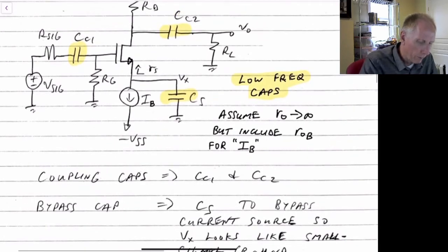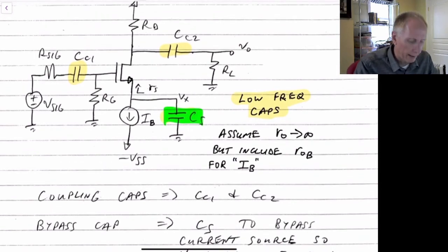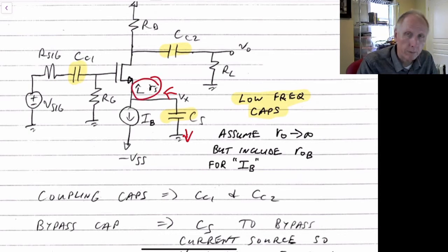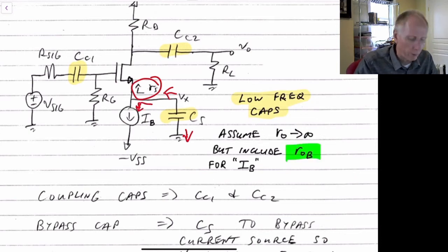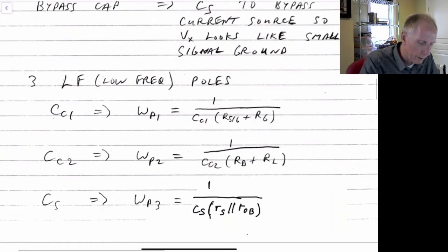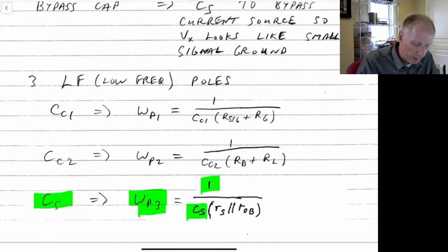Finally, for C sub S, we want to find the impedance it would see across it — looking down into ground and up into the source node. That would be R sub S looking into the source of the transistor, but also R sub B looking down, which we've defined as R sub OB. So we see R sub S in parallel with R sub OB. The pole due to C sub S is omega P3 = 1 / (C sub S × (RS ∥ ROB)).